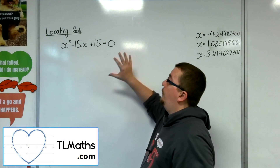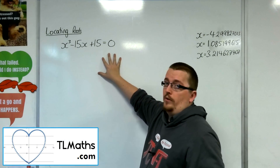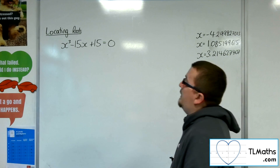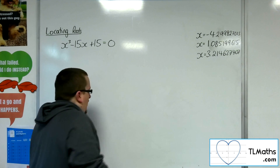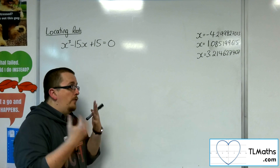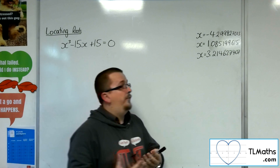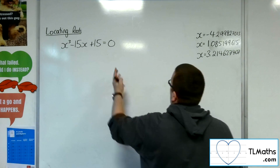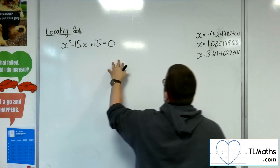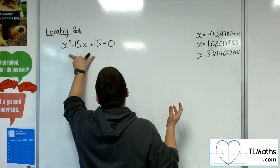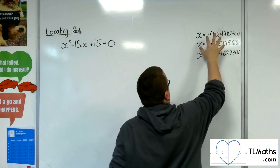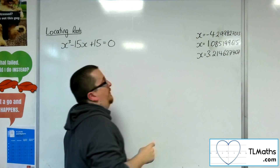Let's say I want to solve this cubic equation: x cubed take away 15x plus 15 equals 0. I've already found the solutions — the three roots of where this curve, y equals x cubed minus 15x plus 15, crosses the x-axis, and it's at these three points.